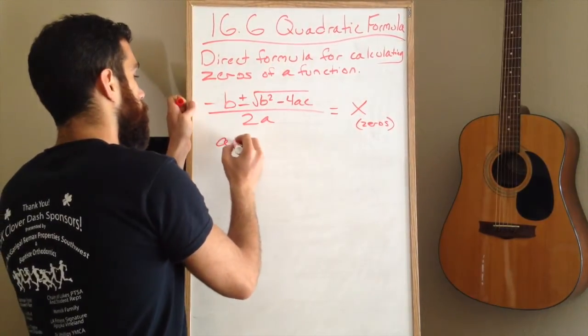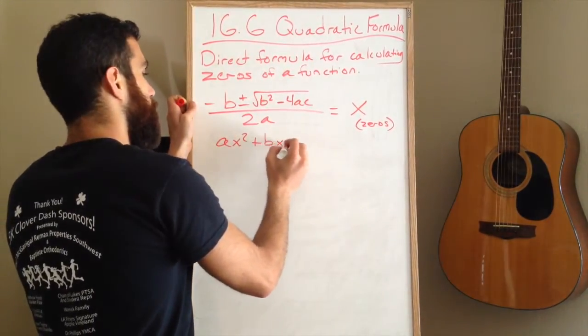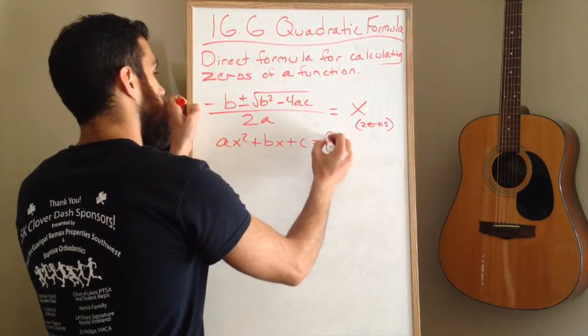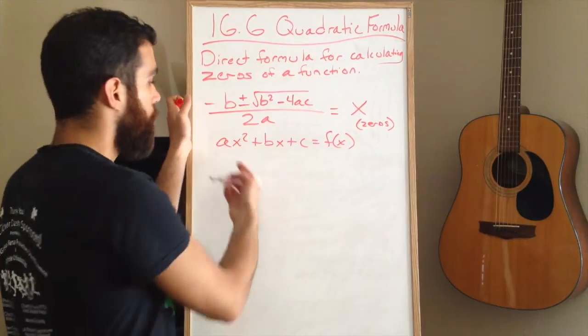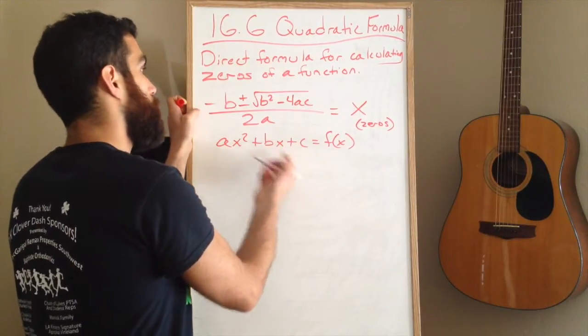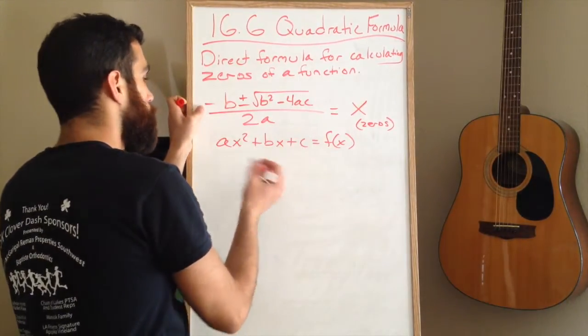You've seen them before. They come from the standard form of a quadratic equation, ax squared plus bx plus c. a, b, and c are just the numbers that you would plug into the formula. Here's an example.